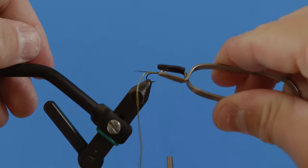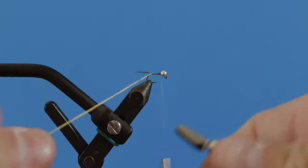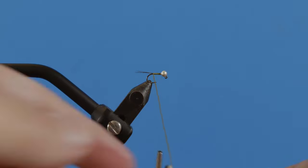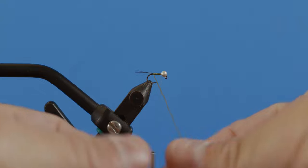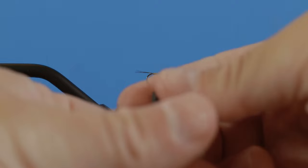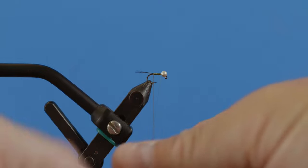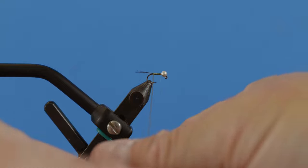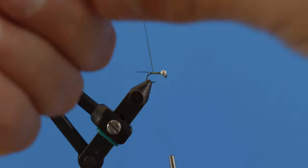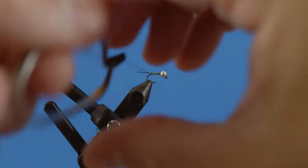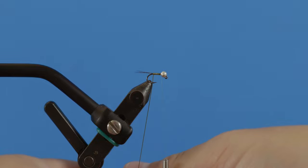So I've got a pair of hackle pliers here, and I'm going to attach that to those two threads. And then I'm going to spin this thread with my hackle pliers counterclockwise until we've got a nice rope from those two fibers together. This will create a nice tapered segmented body.